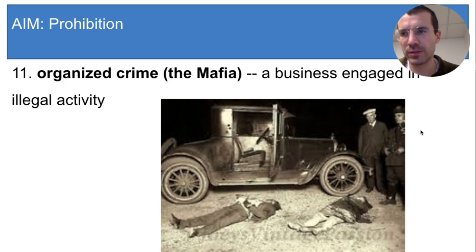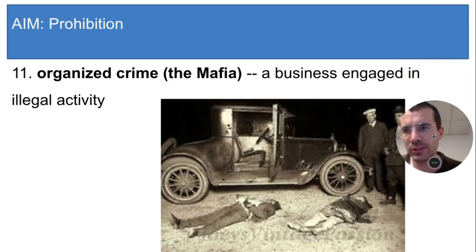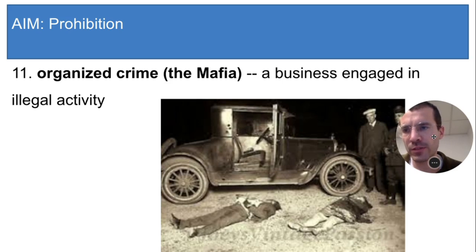Another reason was that Prohibition led to a large increase in violent crime, most of it done by groups called organized crime. Organized crime, or the Mafia, is a business that does illegal things. It's just like a regular business — it has a boss and employees and it sells products for money — but it's all being done illegally. There was a huge demand for illegal alcohol in the 1920s, so organized crime was a very profitable business.